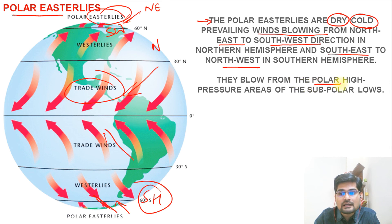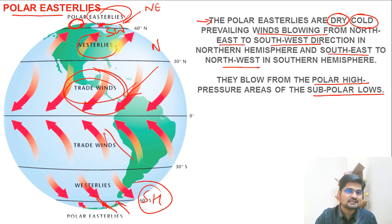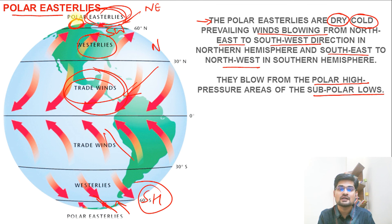So what did we learn? These three major winds — trade winds, westerlies, and polar easterlies — blow over a fairly large area of the earth in a more or less fixed direction. That is why they are called planetary winds, or primary winds, or invariable winds. In the sessions to come, we are going to look at the next set of winds at the regional scale — the secondary winds, which are the variable winds.